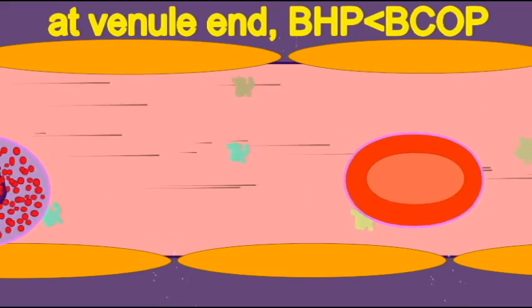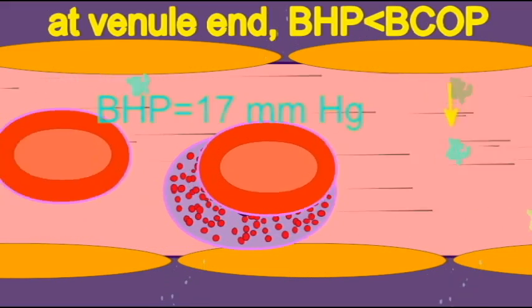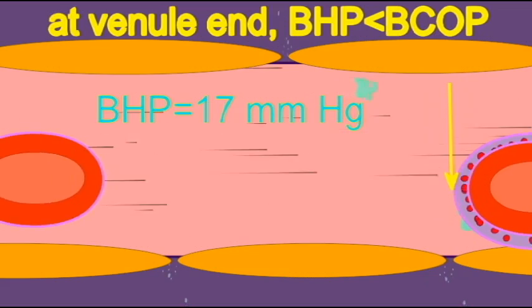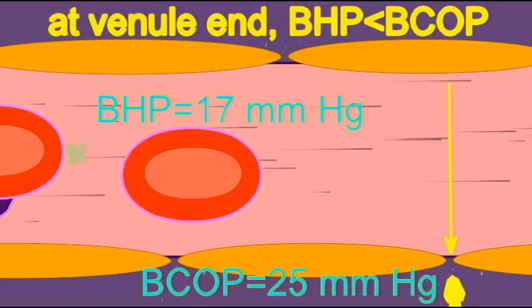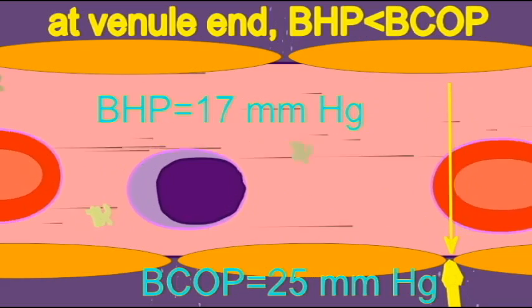As a result, the blood colloid osmotic pressure, the inward force, exceeds the blood pressure, which is the outward force.